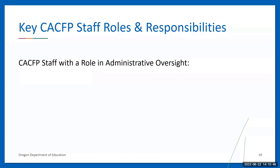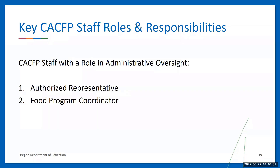Now let's talk about key CACFP staff and their roles and responsibilities in providing administrative oversight. These are staff who are responsible for the administration of the CACFP, have key administrative duties, and have a role in oversight to ensure it is operated in accordance with regulations. ODE CNP needs to know the duties completed by key staff at your organization, and this information will be entered into the CNP Web management plan each year. There are four very important roles: the authorized representative, the food program coordinator, the financial office contact, and the claim contact.